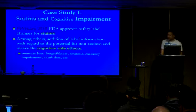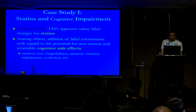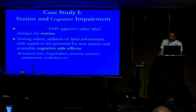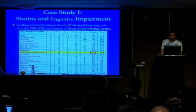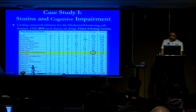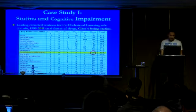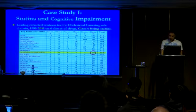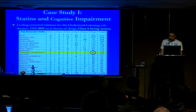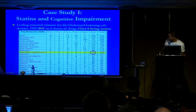Our first case study was for statins, a class of cholesterol-lowering drugs for which the FDA approved a label change in early 2012 for cognitive impairment symptoms such as memory loss. This table displays the extracted drug-ADRs of the six classes of drugs in the cholesterol-lowering domain from 1999 to 2011 — one year prior to the FDA's announcement — and there are numerous extractions of statins and cognitive impairment. Statins are represented by Class VI in this table.